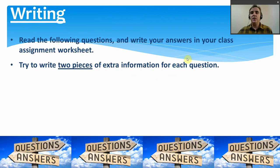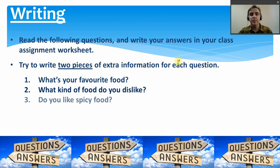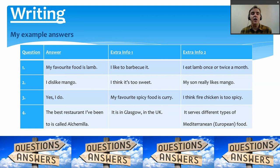This week we are going to try to write two pieces of extra information for each question. Our questions today are: What's your favourite food? What kind of food do you dislike? Do you like spicy food? And what's the best restaurant you've been to? For question one, my favourite food is lamb — I like to barbecue it, and I eat lamb once or twice a month. I've answered the question plus two extra pieces of information: how I cook it and how often I eat it.